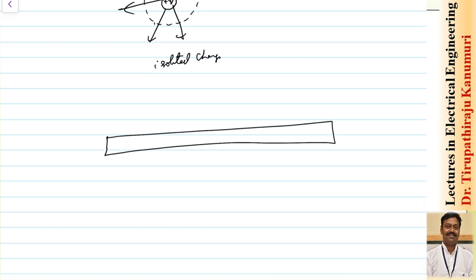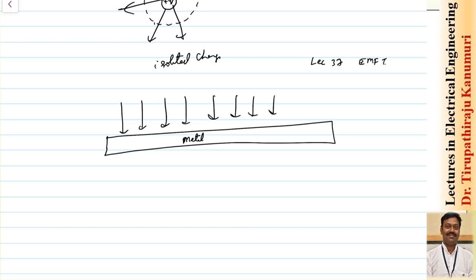Let us now see the case if I am taking a metal. Whenever any metal is kept in the vicinity of the electric field — we have seen the electrical boundary conditions in lecture number 37 of EMFT — whenever the electric field is passing, it always enters and leaves normal to the surface of the conductor. Inside the metal, the electric field intensity will be equal to zero. We call it as the equipotential surface; always the flux lines will be normal to this, and inside flux lines will be equal to zero.